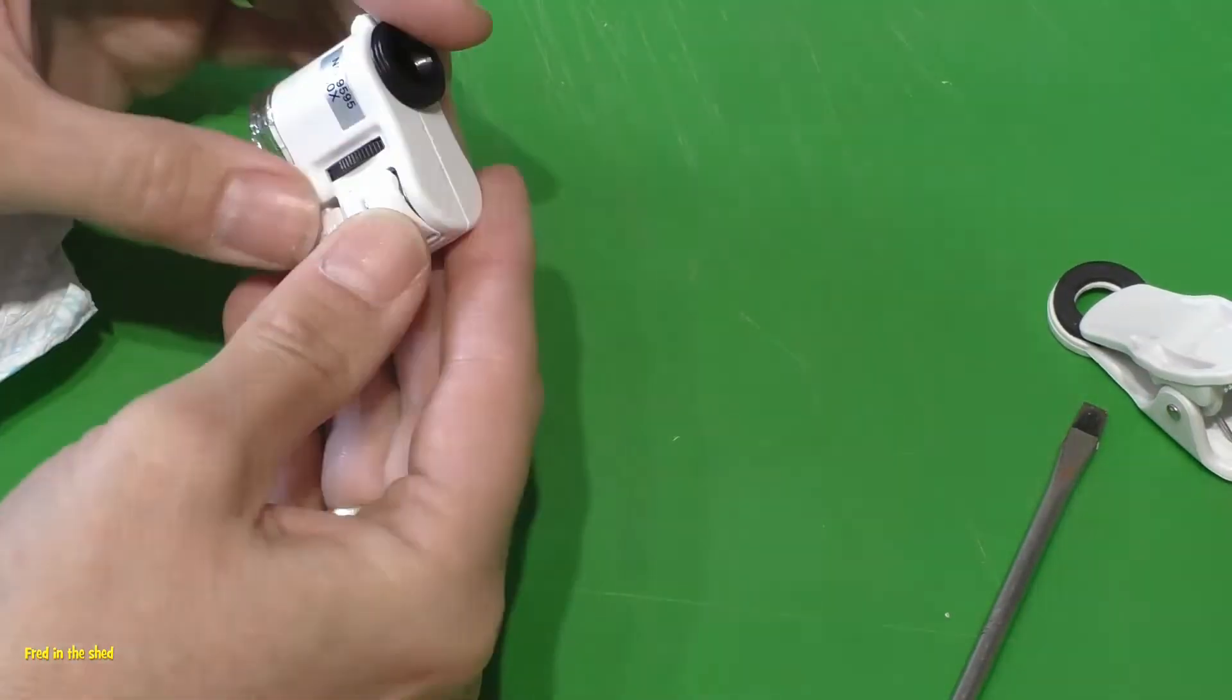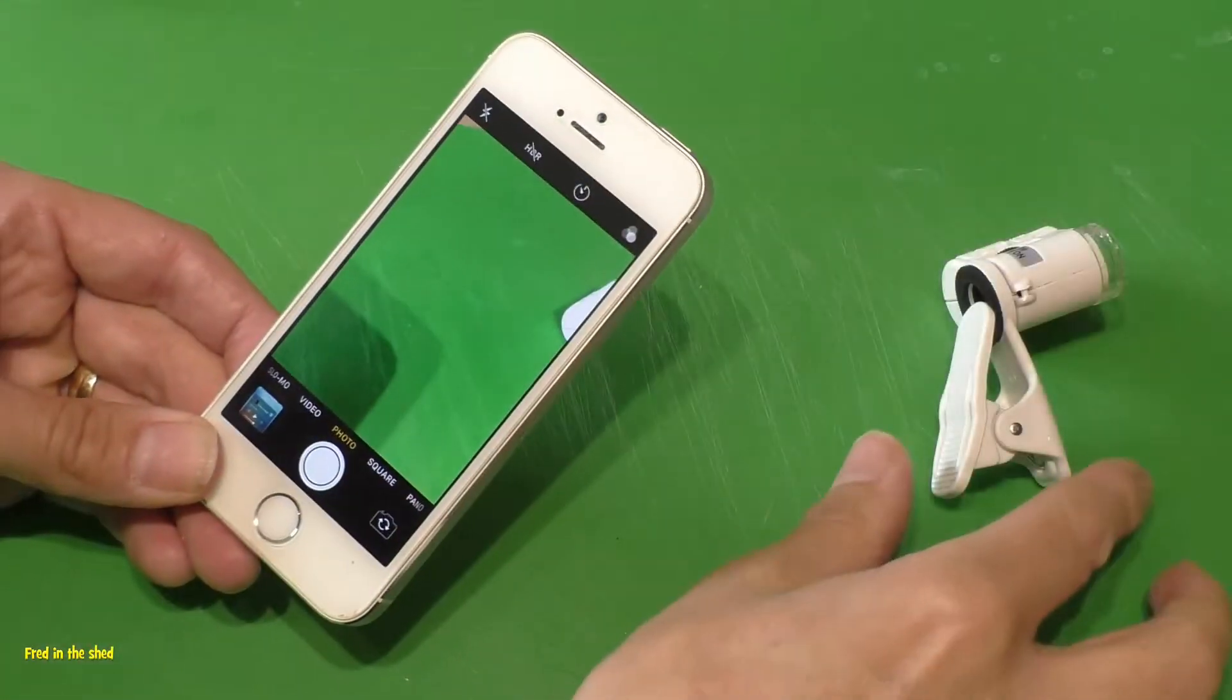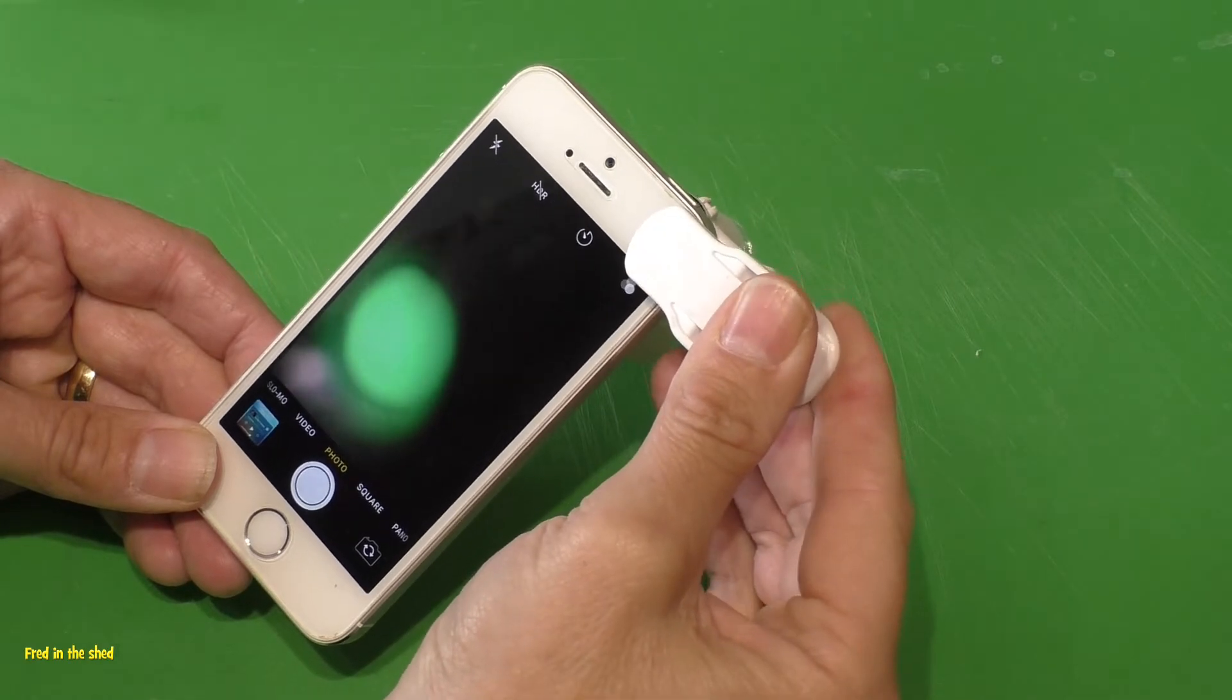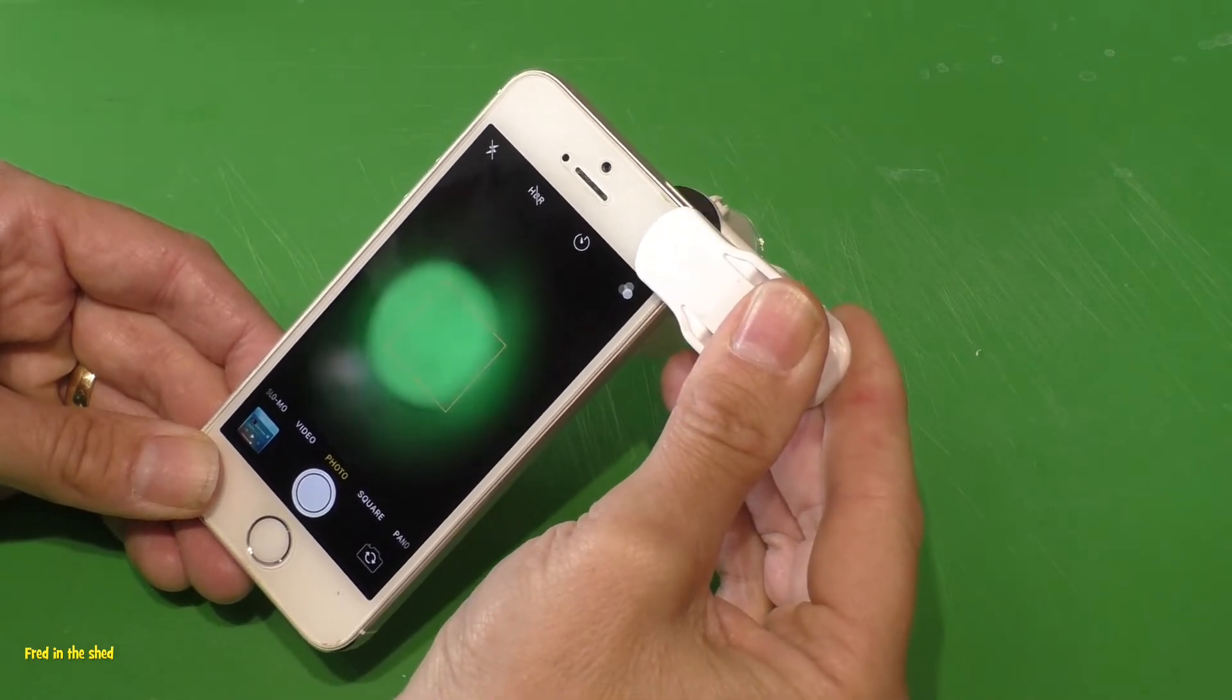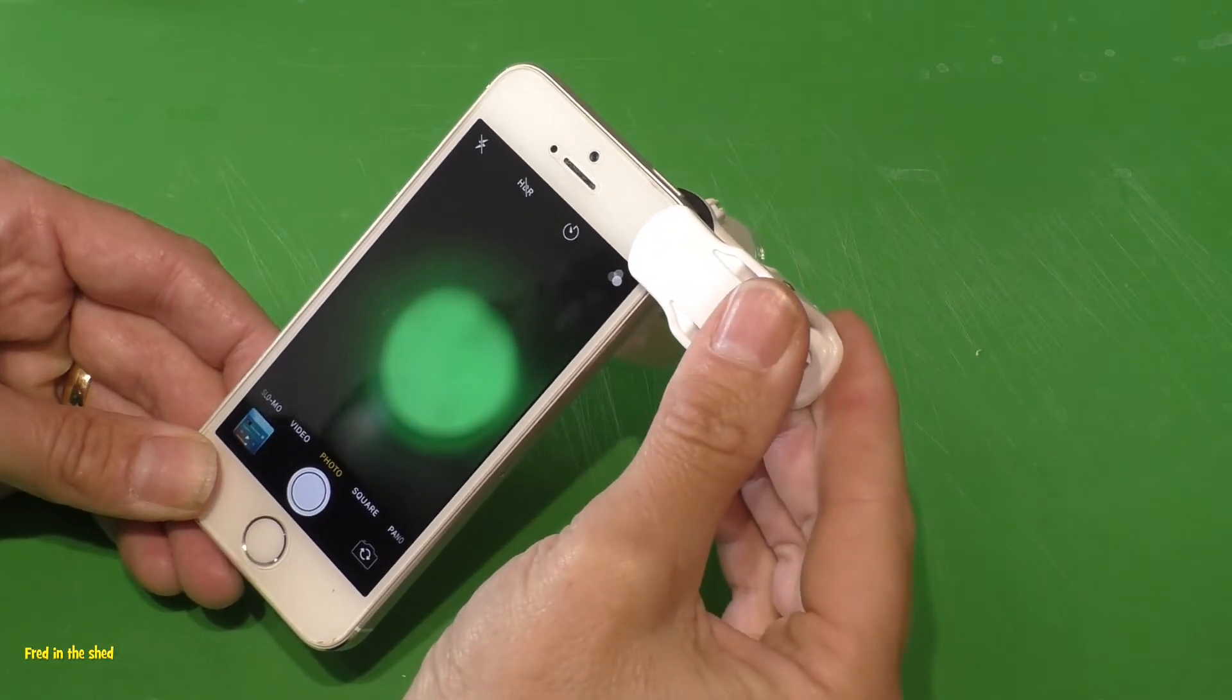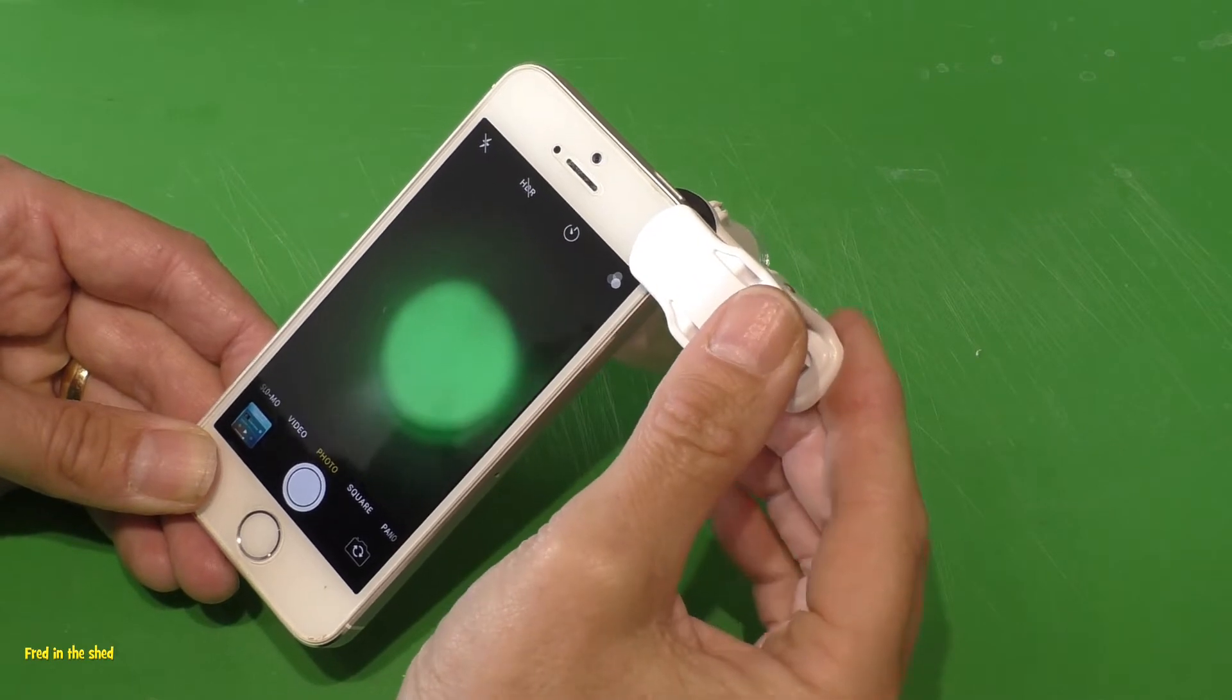How this microscope works is pretty easy, really. It just basically clips over the lens of your phone, and as long as your lens is towards the outer perimeter of your phone, it'll go on no problem. It's a little bit fiddly - you just have to centralize it, and once you get the lens in the middle, you can then use the zoom on the phone itself.